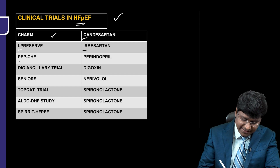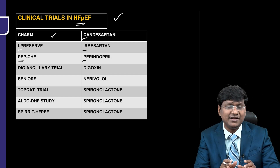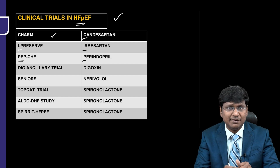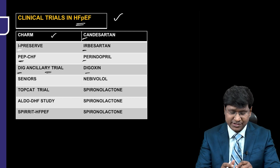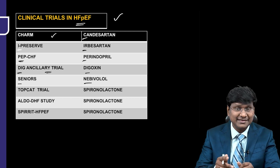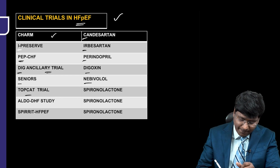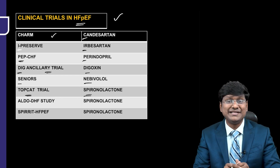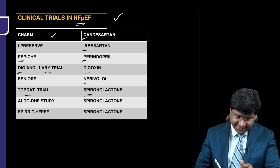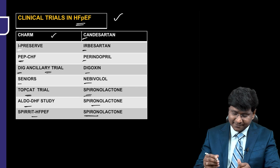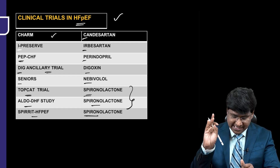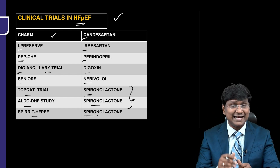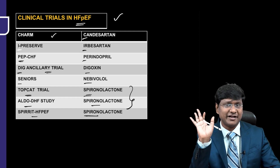Additional trials include: the DIG ancillary trial, in which digoxin was used; the SENIORS trial, in which the beta blocker nebivolol was used; the TOPCAT trial, in which the aldosterone antagonist spironolactone was used; the ALDO-DHF study, in which spironolactone was used; and the SPIRIT-HFpEF trial, in which spironolactone was used. So for spironolactone alone, there are three trials: TOPCAT, ALDO-DHF, and SPIRIT-HFpEF.